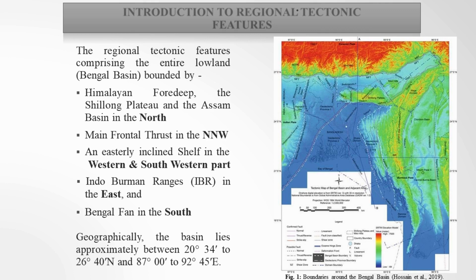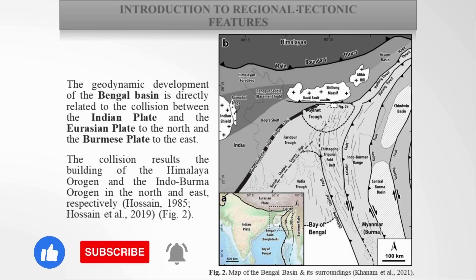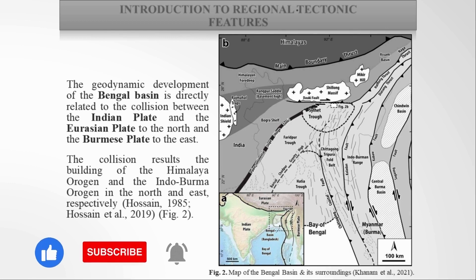Tectonically, the basin is bounded by the cratonic passive margin of the Indian plate to the west, the active Eurasian collisional margin to the north, and the active Indo-Burman ophiolitic subduction margin to the east respectively. This lowland basin, termed the Bengal Basin, is a collisional foreland basin located at the juncture of the Eurasian, Indian, and Burmese plates.